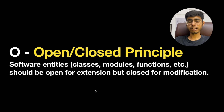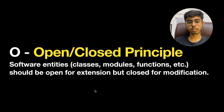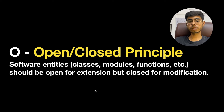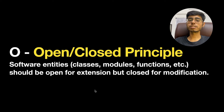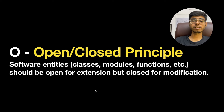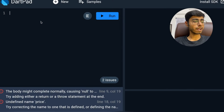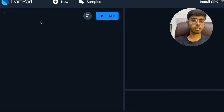Let's say you've written a class, module, or function and the code is complete. Once it is deployed — your e-commerce app is live on Play Store or App Store — the classes you have written should be open for extension, meaning they can be extended with new features and functionalities, but the previous code should not be modifiable. Previous code is closed for modification, but new extensions can be added.